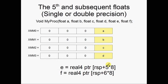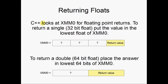E and F would be at exactly those same stack locations even if they were doubles — all you'd change is the type to real8. For returning floats, C++ looks at the bottom of XMM0 for floating point return values. To return a single 32-bit float, put the value in the lowest 32 bits of XMM0. To return a double, put the value in the lower 64 bits of XMM0.